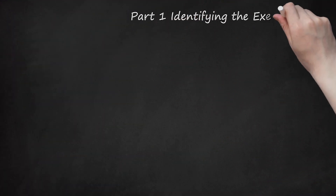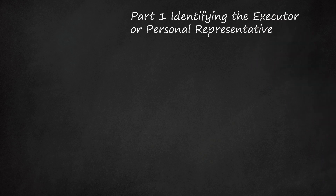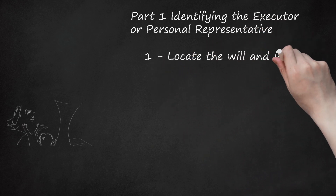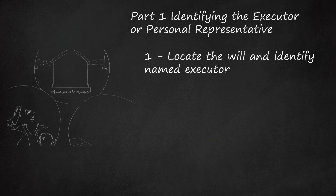Part 1: Identifying the Executor or Personal Representative. Step 1: Locate the will and identify the named executor. When a loved one dies, it is important to determine if there was a last will and testament and locate that will. Below are some ways to determine if there was a will and how to find it. Ask the decedent's family — always ask any surviving spouse or children whether there was a will and if they know where the decedent kept it.